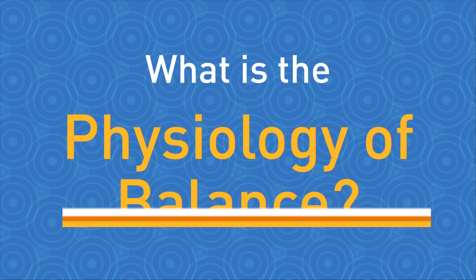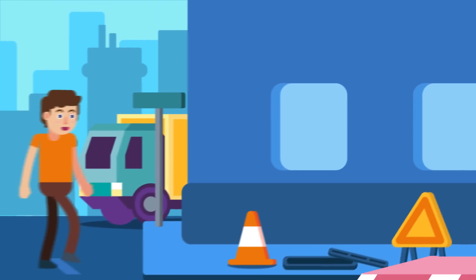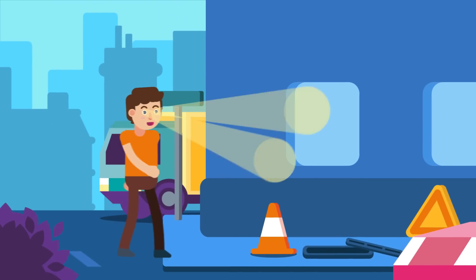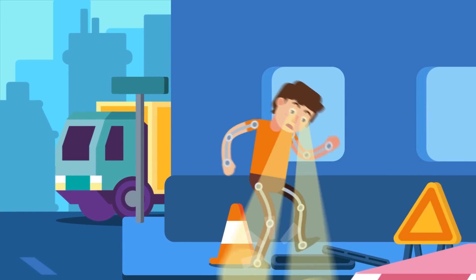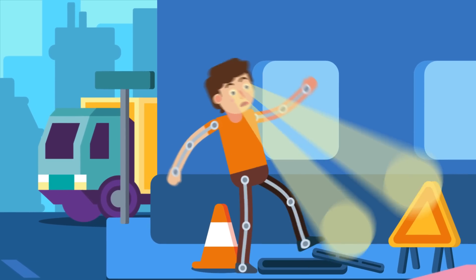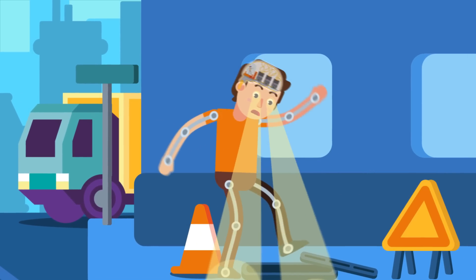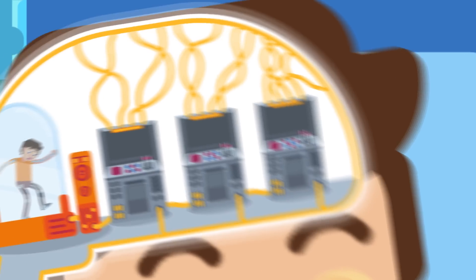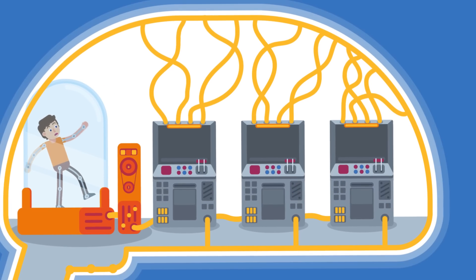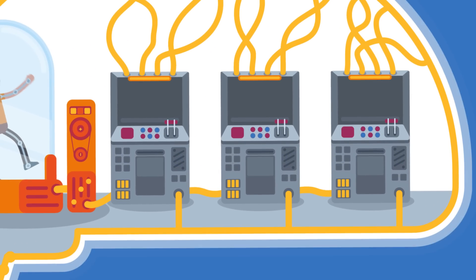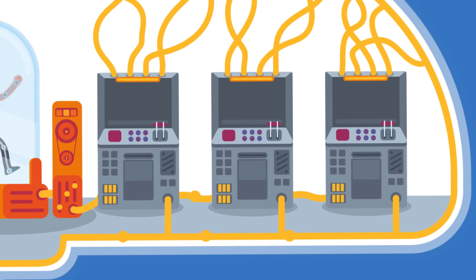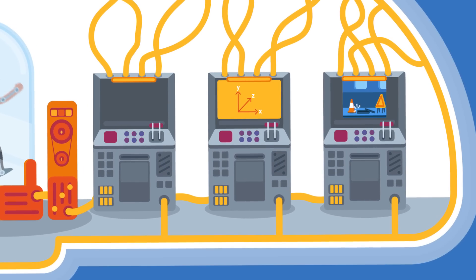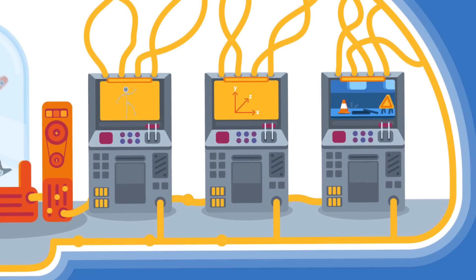What is the Physiology of Balance? The human balance system works with our visual and skeletal systems to maintain orientation or balance. Visual signals are sent to the human brain about the body's position in relation to its surroundings. These signals are processed by the brain and compared to information from the vestibular, visual, and skeletal systems.